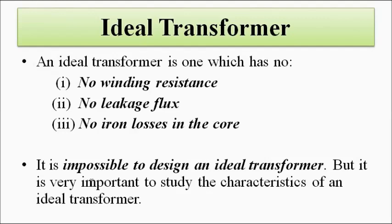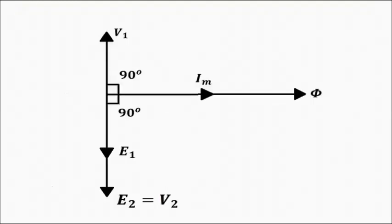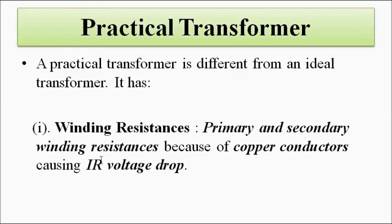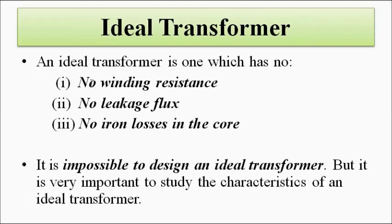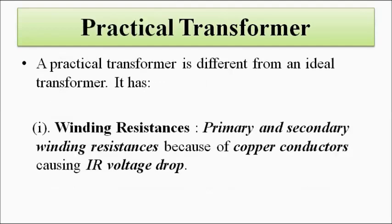We only use the ideal transformer as a reference model to compare and analyze the performance of actual transformers. This is the phasor diagram for an ideal transformer under no-load condition. A practical transformer is different from an ideal transformer because it has winding resistance, leakage flux, and eddy current and hysteresis losses — collectively called iron losses.